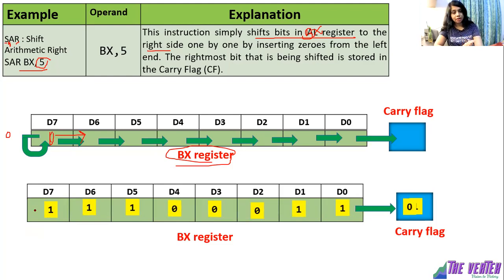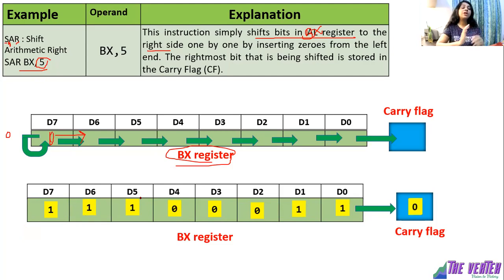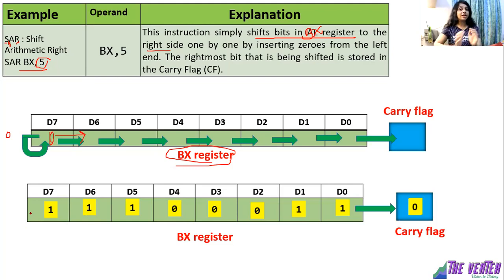Since the count is five, this process should repeat five times. The data shifts towards right by one bit position with D7 remaining at D7 each time, then again shifts right, then again — five times total it will shift towards right.